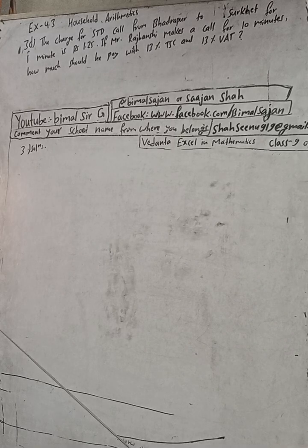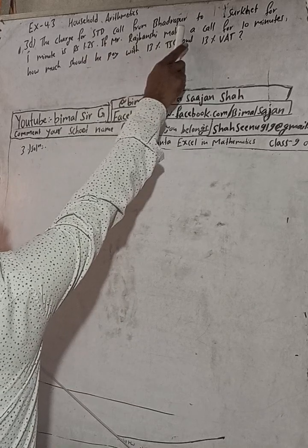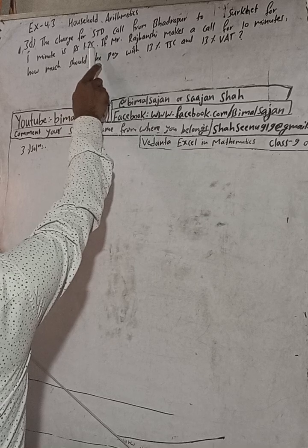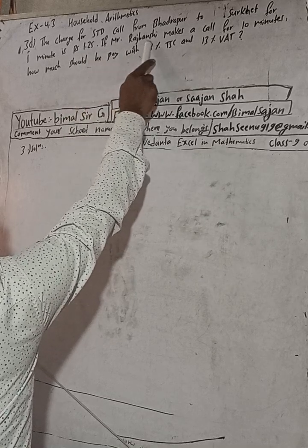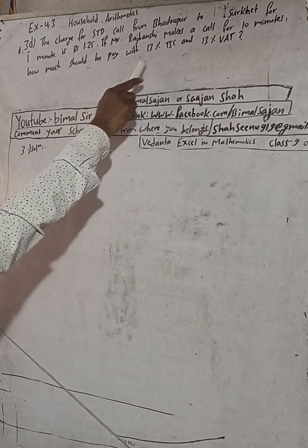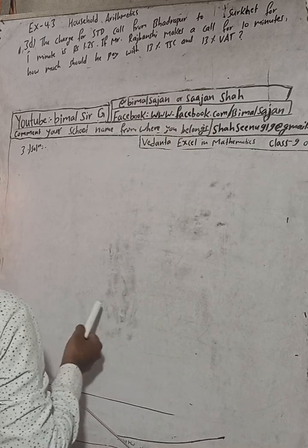Hi class 9 and 10 students, welcome back to Bimbal Sarji YouTube channel. This is question number 3D, exercise 4.3, Household Arithmetic, Vedanth Excel in Mathematics class 9. The question is: the charge for an STD call from Bhadrapur to Surkhet for one minute is Rs 1.25. If Mr. Raj Bhansi makes a call for 10 minutes, how much should he pay with 13% TSC and 30% VAT?